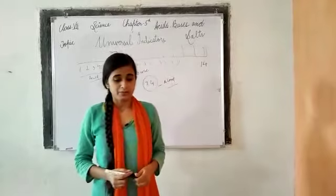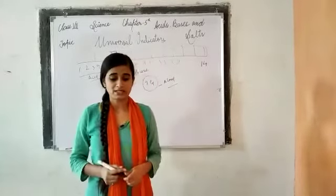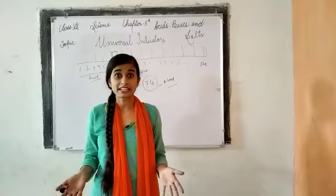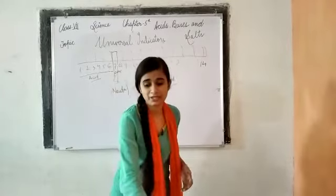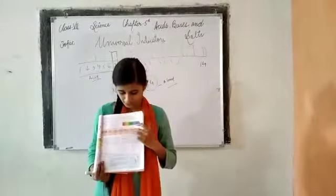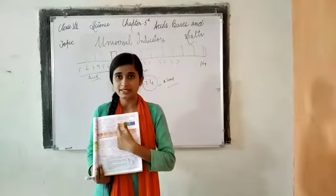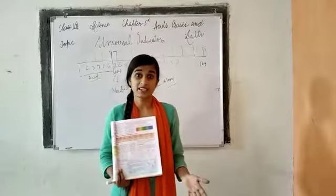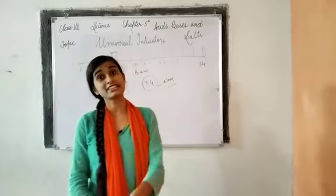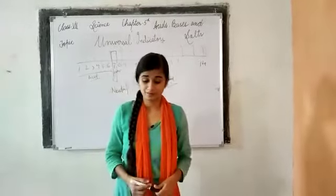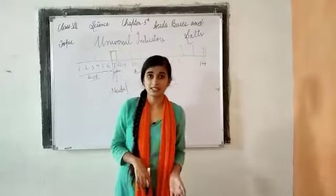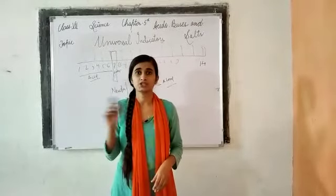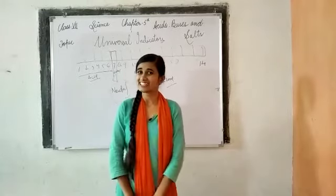To determine what type a solution is, we add the pH scale, which indicates a color, and we match that color on the pH scale chart to find the value — whether it is acid, base, or neutral, and how acidic or basic it is. I will send you the chart later so you can learn it. Today's class ends here — thank you, have a nice day.